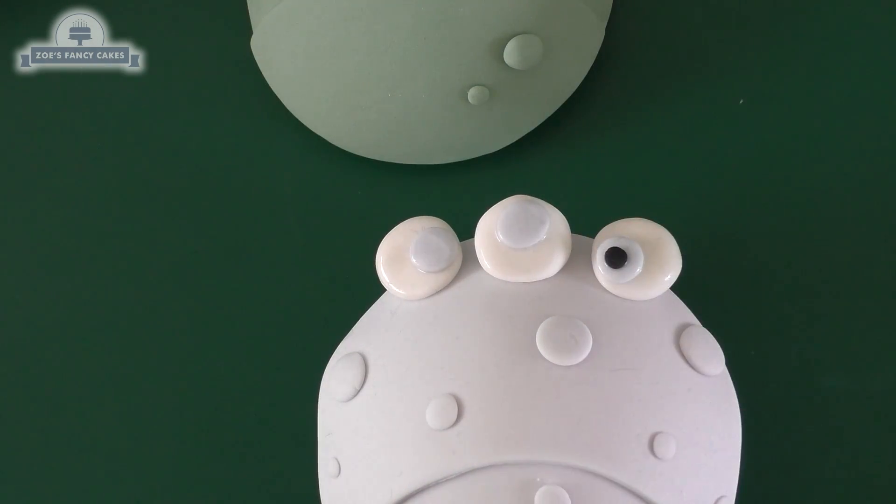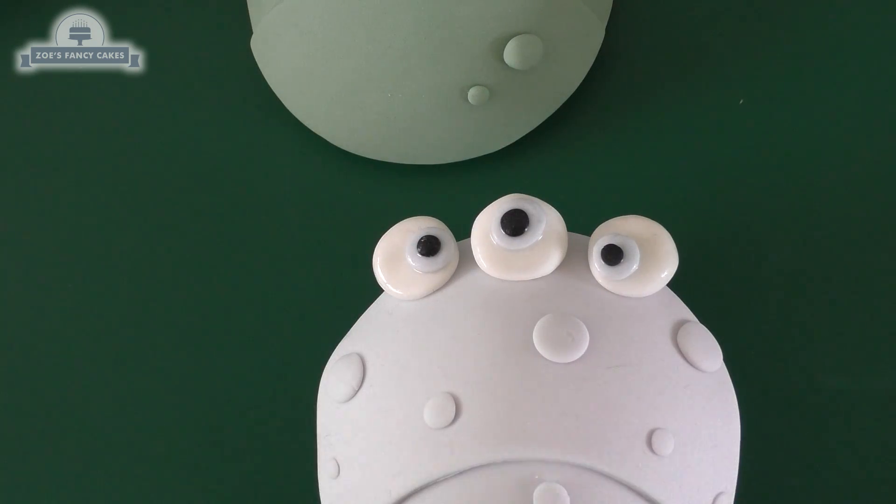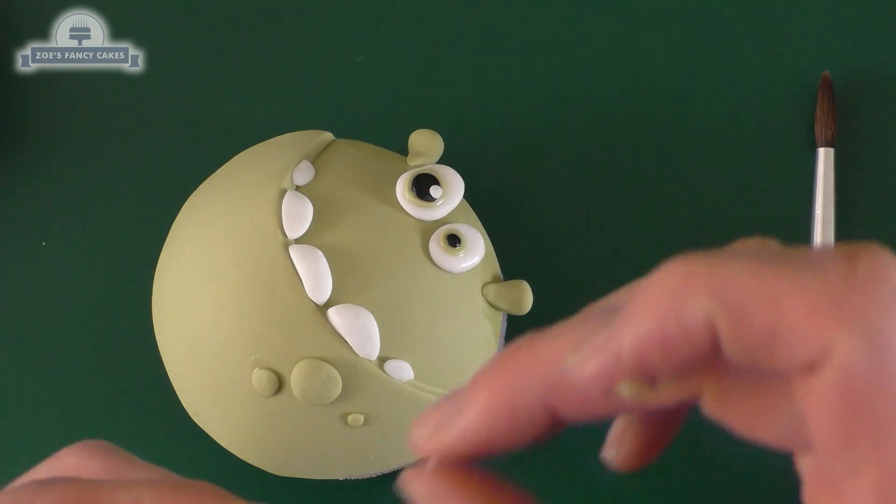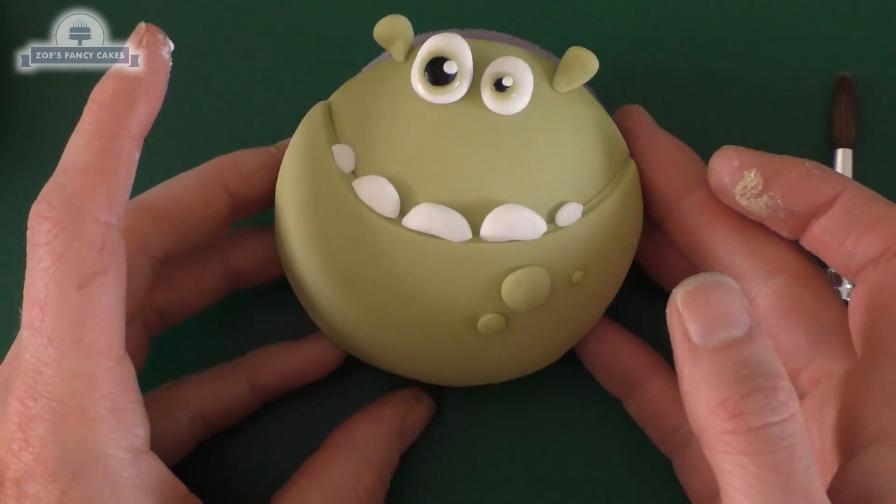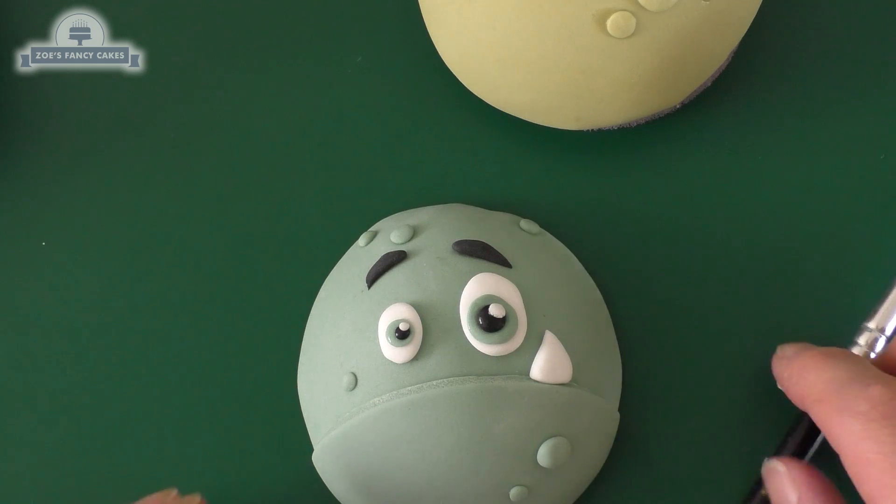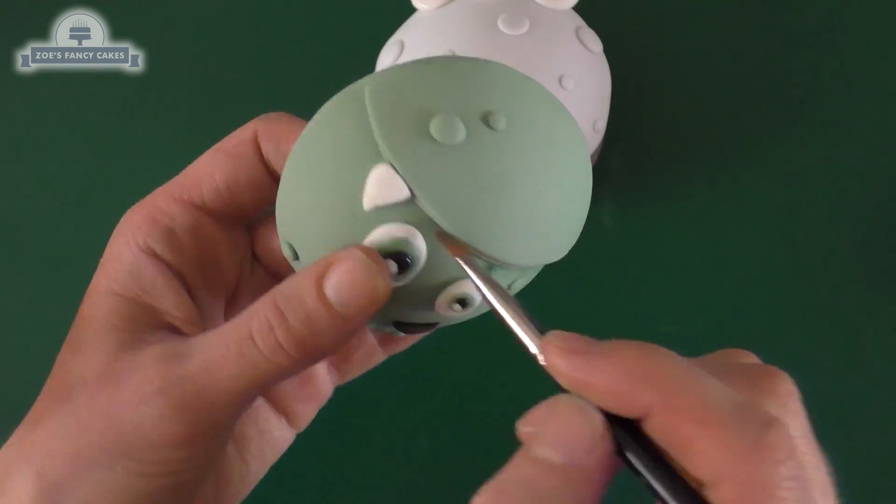I'm just going to play around now with different numbers of eyes, see what they all look like. Let's give this one three. They just now need some little balls of white in the eye just to bring them to life a little bit more. Put one in this one as well, and we'll do the same in all the different ones we've made.